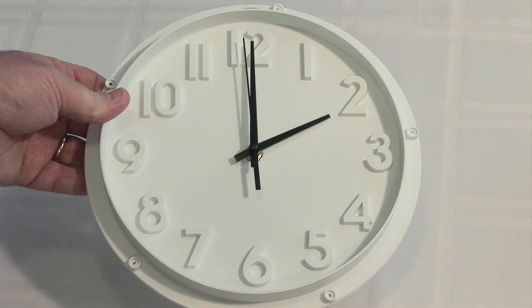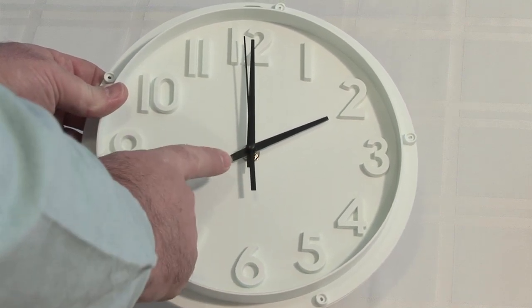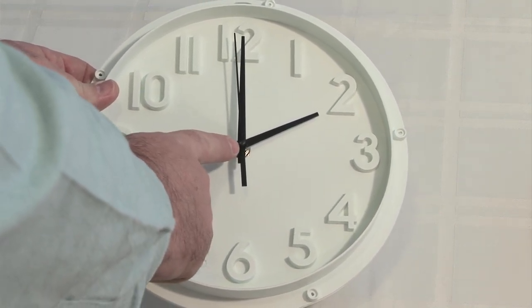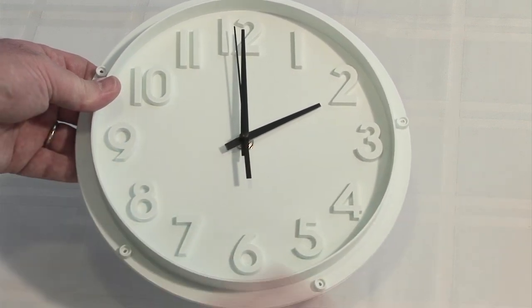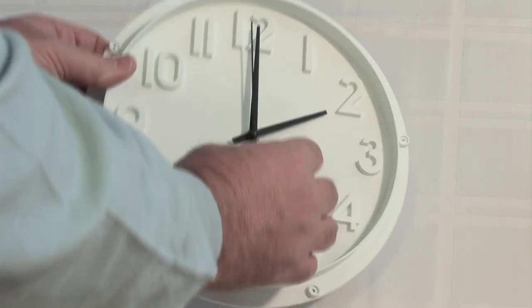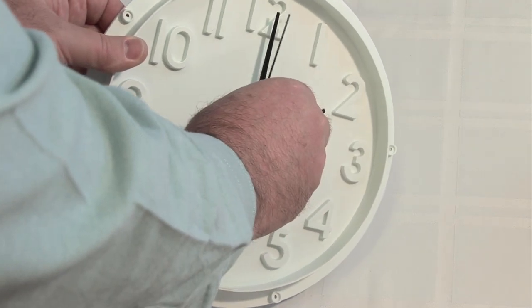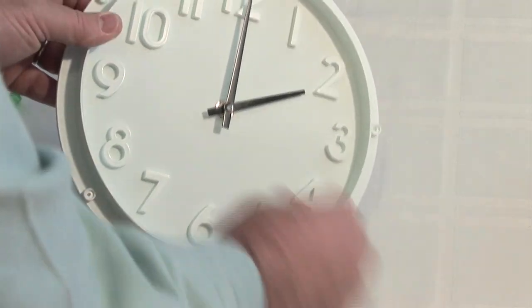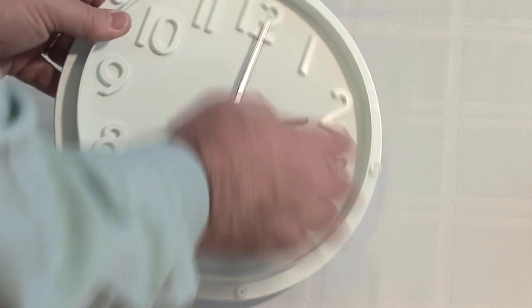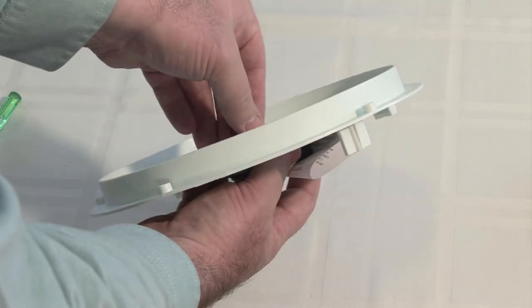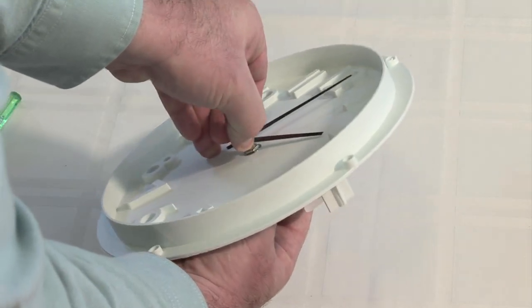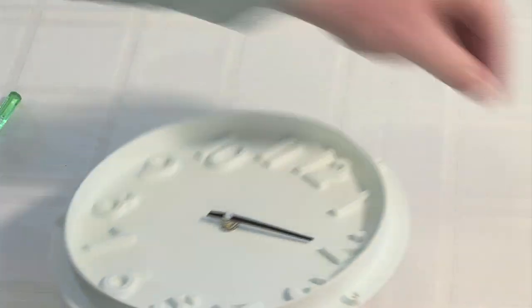Unfortunately the new clock movement is not going to work with these old clock hands. So I'm going to have to take these off and set them aside and replace them with new hands that I ordered. These hands just press on, so that means they just easily pull off. You can just gently pull them towards you and they come right off.